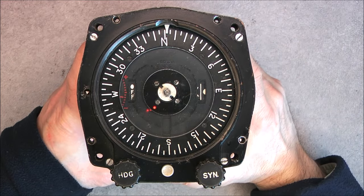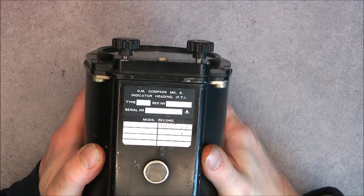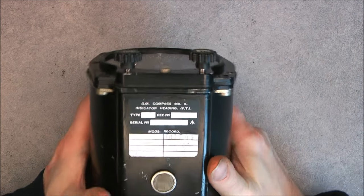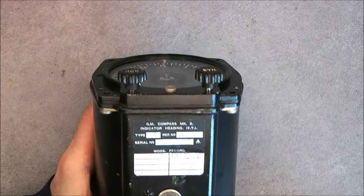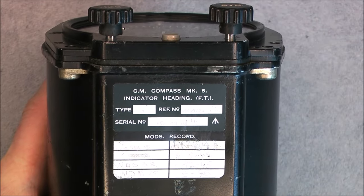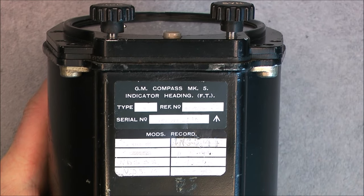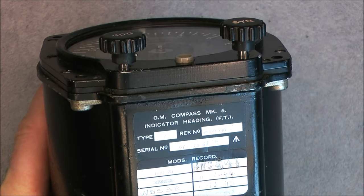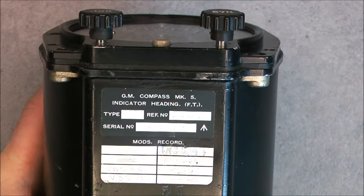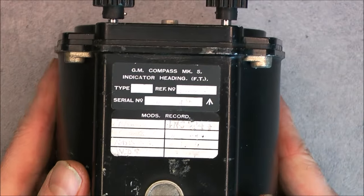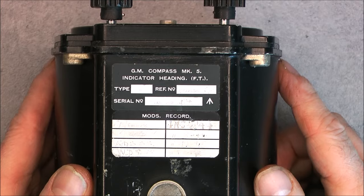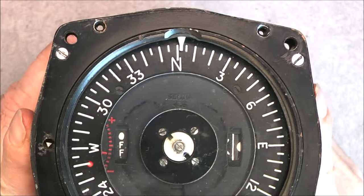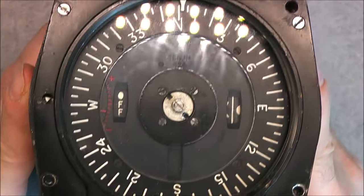What is it? A gyromagnetic compass Mark 5 indicator heading type A, reference number 6B2656, serial number 573. Apparently after there is a 65, so it may be the manufacturing date. And yes, Broad Arrow, of course, British made.